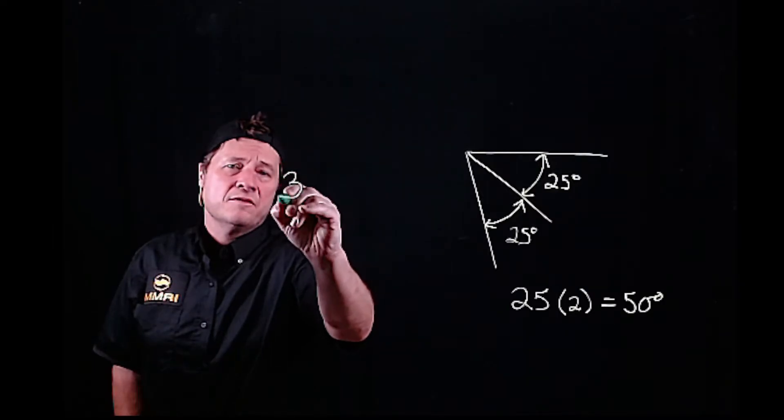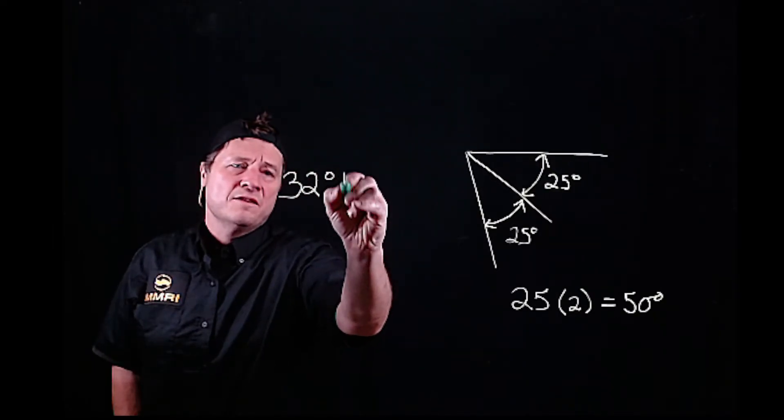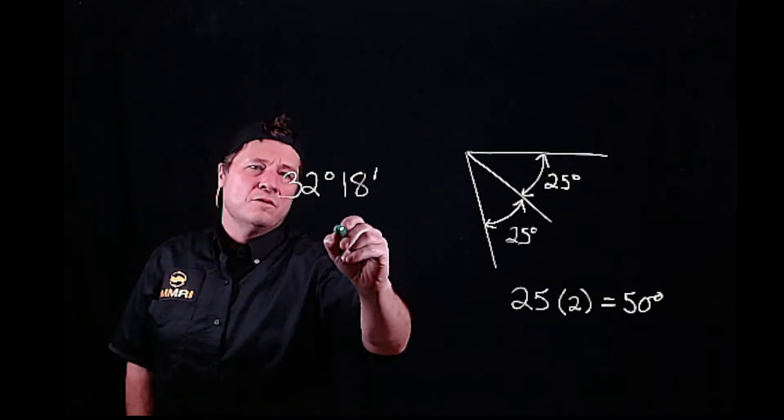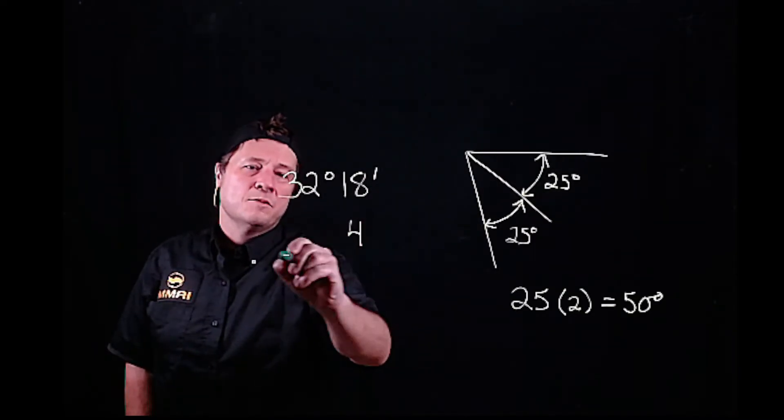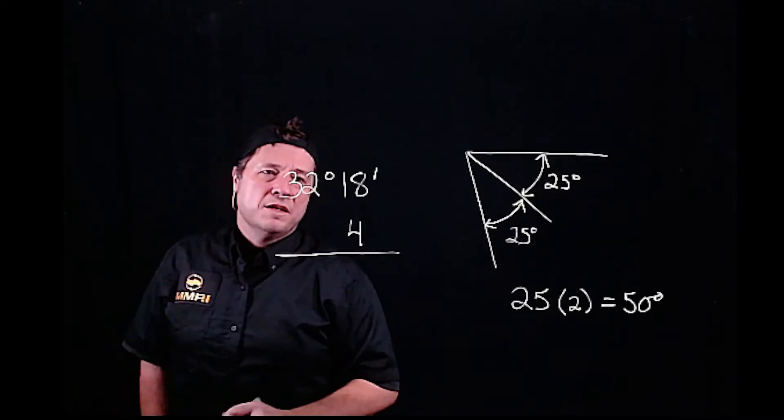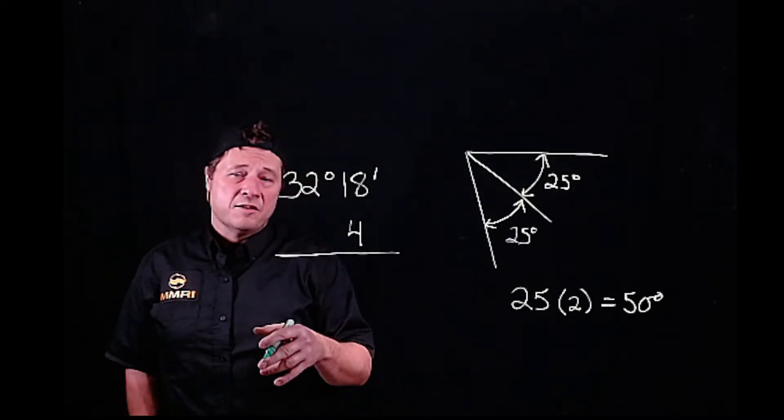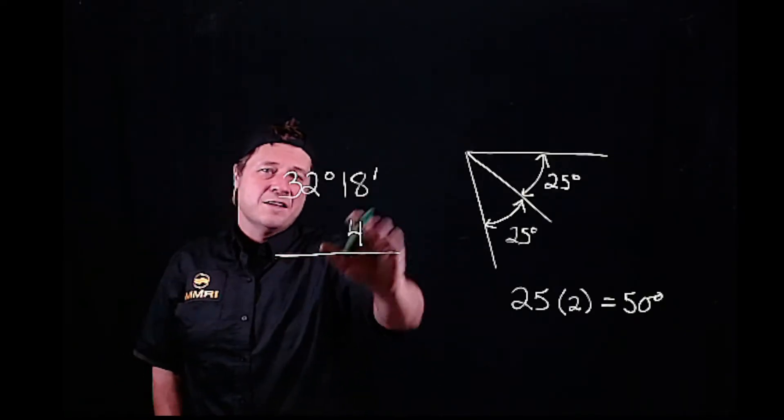Let's imagine 32 degrees 18 minutes times 4. Let's go old school. You multiply the minutes and then you multiply the degrees. You don't multiply this number as a whole number.